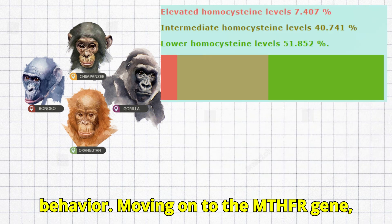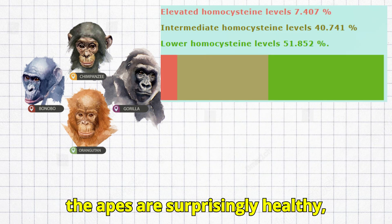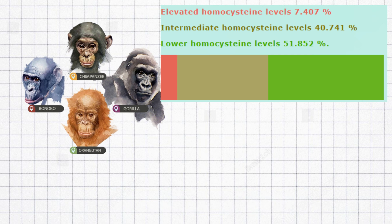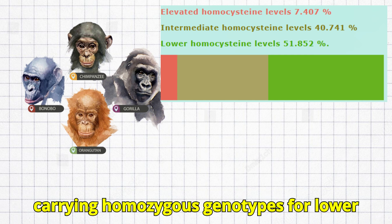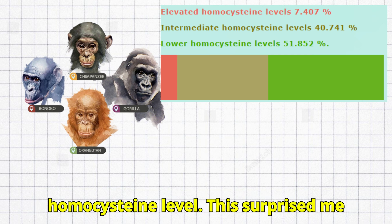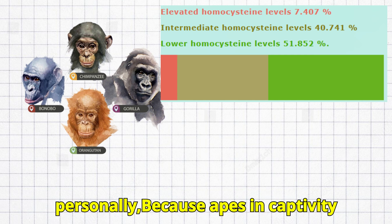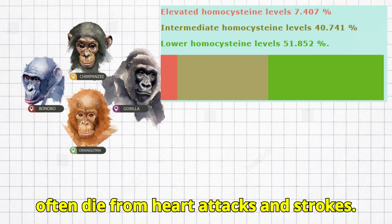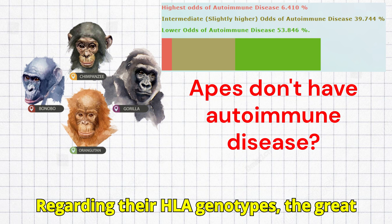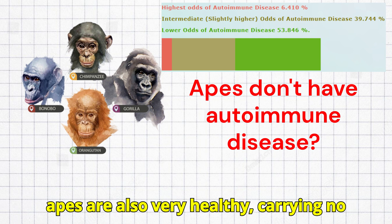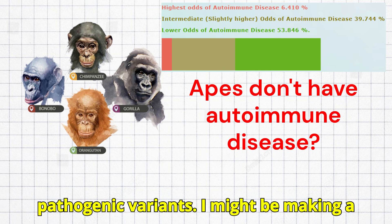Moving on to the MTHFR gene, the apes are surprisingly healthy, carrying homozygous genotypes for lower homocysteine levels. This surprised me personally, because apes in captivity often die from heart attacks and strokes. Regarding their HLA genotypes, the great apes are also very healthy, carrying no pathogenic variants.